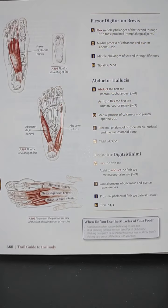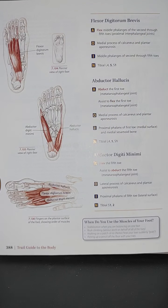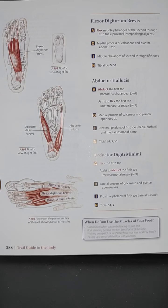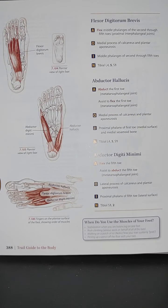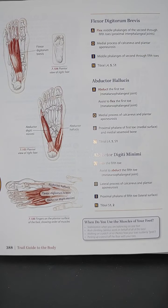Moving to image 7.105, a plantar view of the right foot, you can see the abductor hallucis and also the flexor digitorum brevis. The action of the abductor hallucis is to abduct the first toe and assist to flex the first toe. Origin is the medial process of the calcaneus and plantar aponeurosis, and insertion is the proximal phalanx of the first toe at the medial surface and medial sesamoid bone.